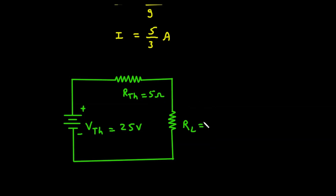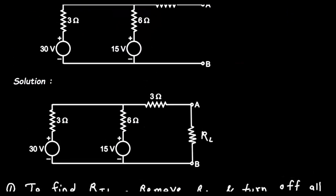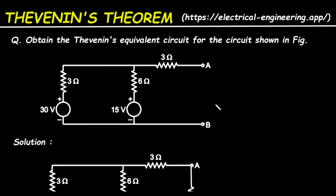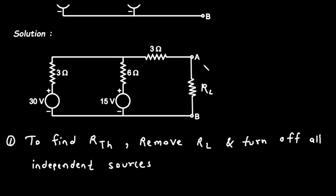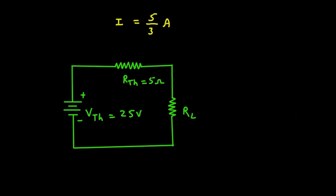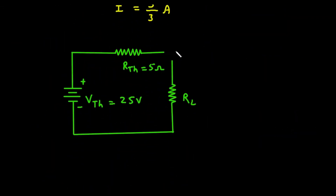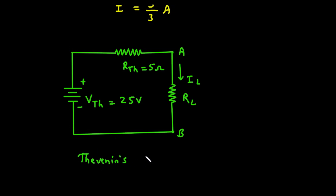The value of RL is not given here; we can see only the AB terminals are given, so there is no specific value for RL. So let's label this terminal as terminal A and this terminal as terminal B, with load current IL. This is called the Thevenin's equivalent circuit. This is how we can solve this problem.